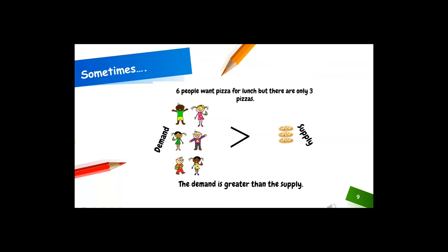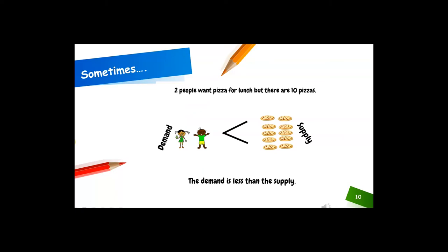If six people want pizza for lunch and there are only three pizzas, the demand is greater than the supply. This means that everybody is not going to get the pizza they want — their wants are not going to be satisfied. If two people want pizza for lunch but there are 10 pizzas, the demand is less than the supply, so everybody's wants will be satisfied. However, the market will have too much of a supply.